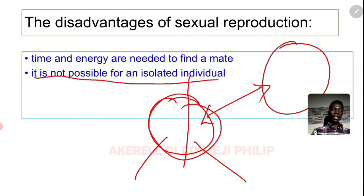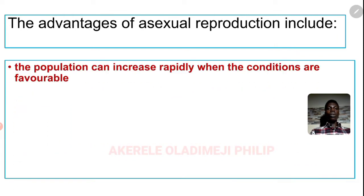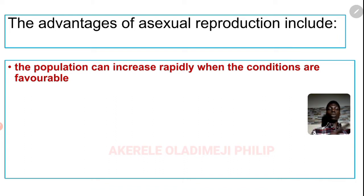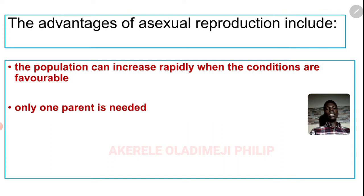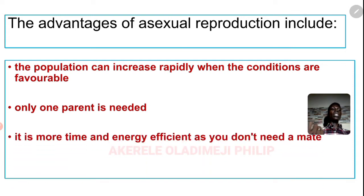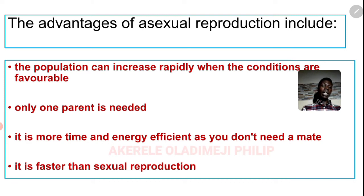Now the advantages of asexual reproduction: the population can increase rapidly when conditions are favorable — like bacteria, which can reproduce so rapidly that you can have thousands of organisms within a short time. Only one parent is needed, so you don't have to look for another parent. It is more time and energy efficient since you don't need a mate. The organism just divides and reproduces. It is also faster than sexual reproduction.